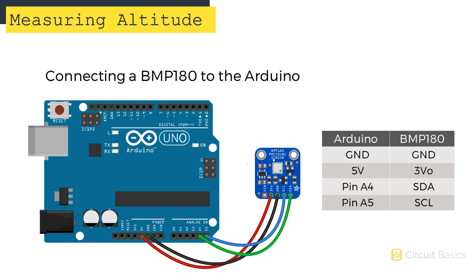We're going to connect the BMP180 to the Arduino just like we did in the last video. The SDA pin on the sensor connects to Arduino pin A4, and the SCL pin on the sensor connects to pin A5. Ground connects to ground, and the VCC pin on the sensor can connect to either 3.3 volts or 5 volts.